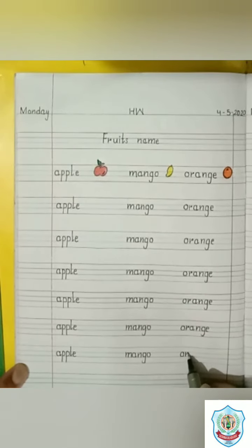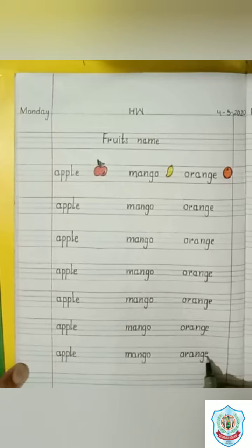O has a sound O. R has a sound R. A has a sound A. N has a sound N. And G, E makes a sound G. Orange.